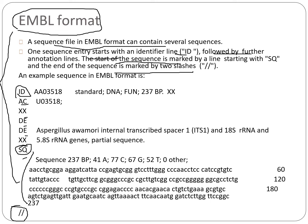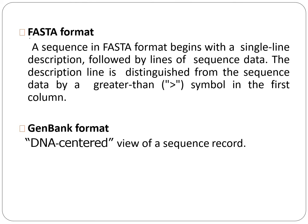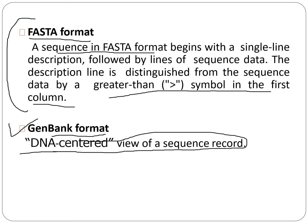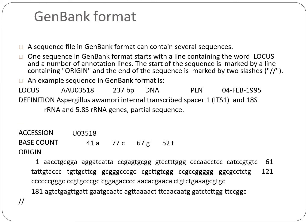So in EMBL, we have the ID, then SQ to mark the start of the sequence data. Moving on to FASTA format: a sequence in FASTA begins with a single-line description followed by lines of sequence data. The description line is distinguished by a greater-than '>' symbol in the first column. GenBank format is the DNA-centered view of a sequence record.